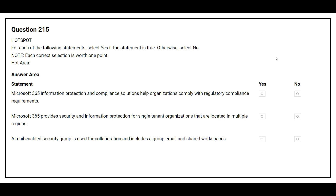Question number 215. For each of the following statements, select Yes if the statement is true, otherwise select No. The first statement is: Microsoft 365 information protection and compliance solutions help organizations comply with regulatory compliance requirements. The correct answer is Yes. The second statement is: Microsoft 365 provides security and information protection for single-tenant organizations with information located in multiple regions. The correct answer is No. The third statement is: a mail-enabled security group is used for collaboration and includes a group email and shared workspaces. The correct answer is Yes.